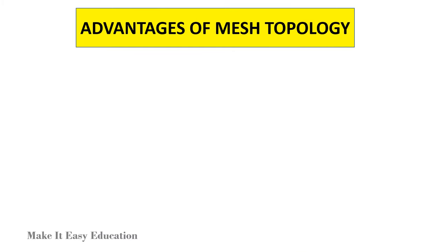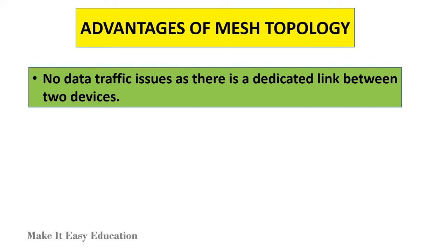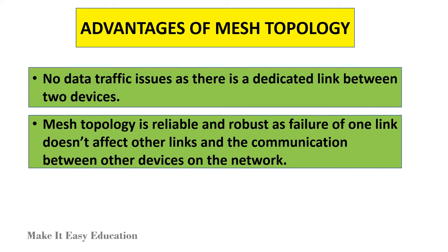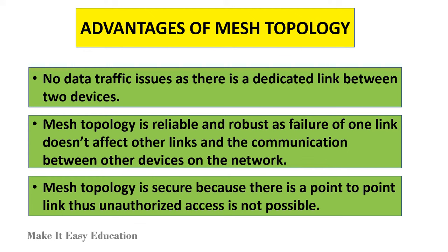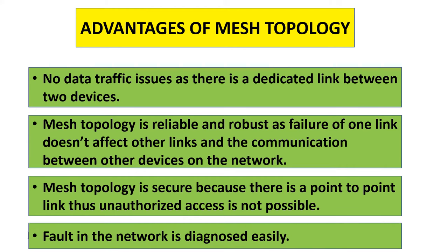Advantages of mesh topology: No data traffic issues, as there is a dedicated link between two devices. Mesh topology is reliable and robust, as failure of one link doesn't affect other links and the communication between other devices on the network. Mesh topology is secure because there is a point-to-point link, thus unauthorized access is not possible. Fault in the network is diagnosed easily.